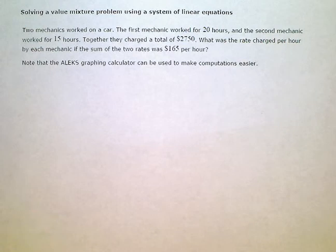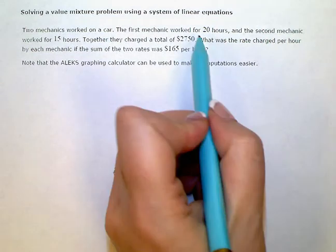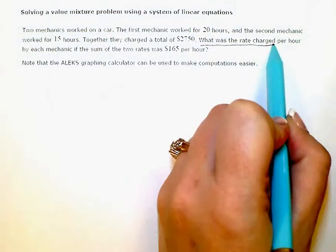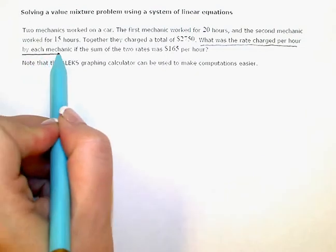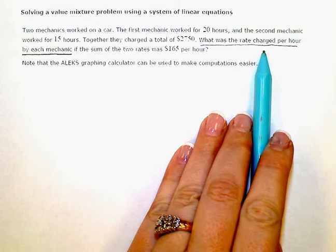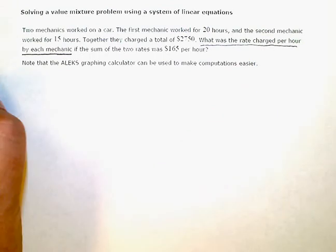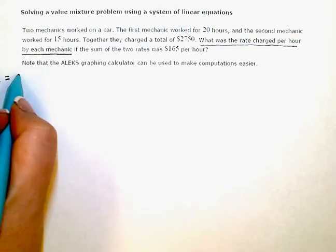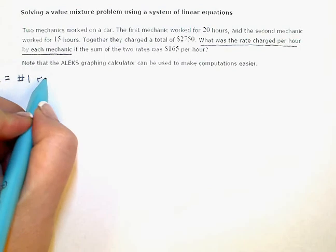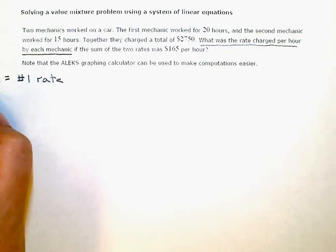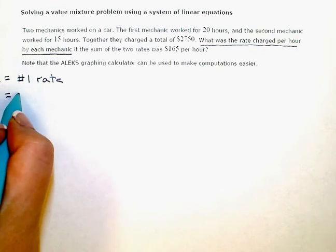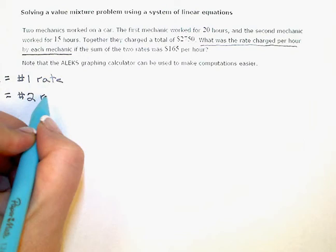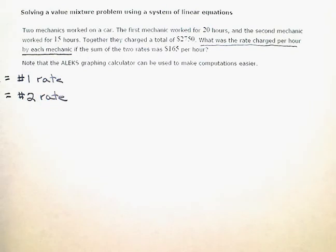The first thing I'm going to do is define my variables. The question is asking what was the rate charged per hour by each mechanic. So I'm going to let x be the rate charged by mechanic number 1, and I'm going to let y be the rate charged by mechanic number 2. That's what the question is asking me, so I know that's what I need my variables to be - the rates for each individual mechanic.